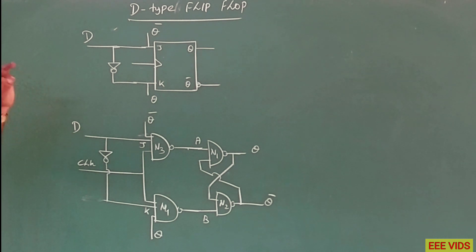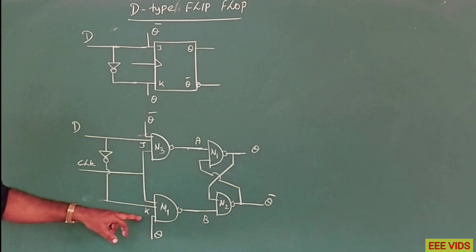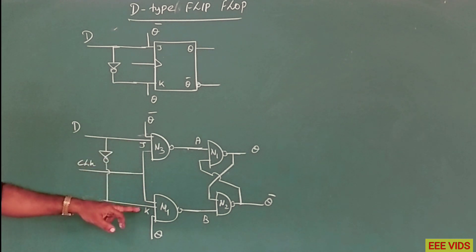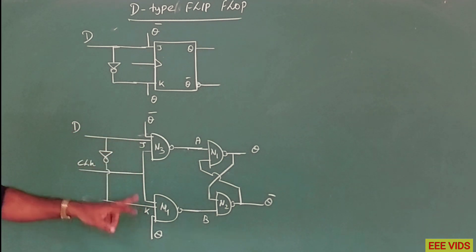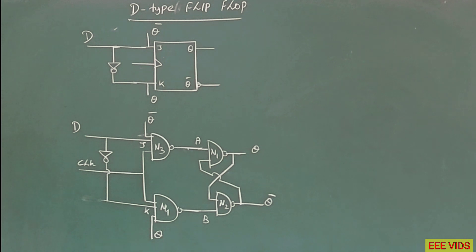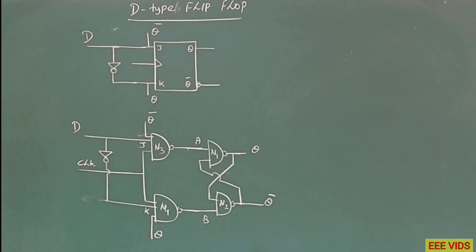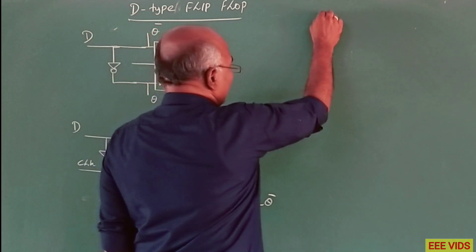With D input as a single input: when D input is 1, J=1 and K=0; when D input is 0, J=0 and K=1. So these are the two conditions for D input. Based on J-K input, there are two conditions: one gives output 0 or 1, and the other gives output 0. This is the D-type flip-flop truth table.